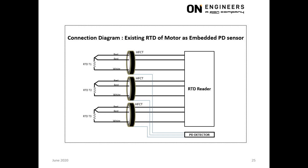This provides the best sensitivity and immunity from pick-up of background noise, as compared to measuring the RTD at the remote stator panel of the motor. If there are embedded PD couplers at the motor, the PD measurement of the RTD can be compared for accuracy.